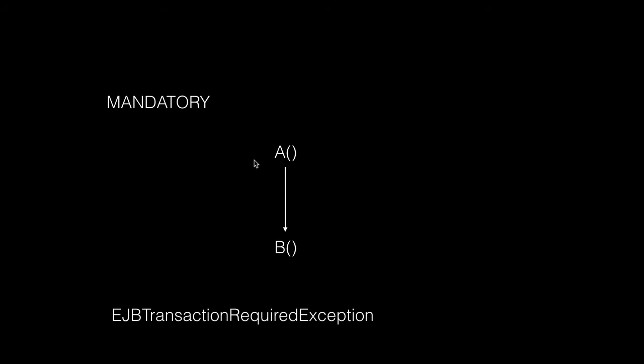Let's start with mandatory. If method A in the services layer is calling method B on the DAO layer, and we mark method B with the mandatory attribute type, then A must have a transaction before it calls B. If there is no transactional context before A calls B, the container throws an EJBTransactionRequiredException. We use mandatory when we want to enforce that a transaction already exists.